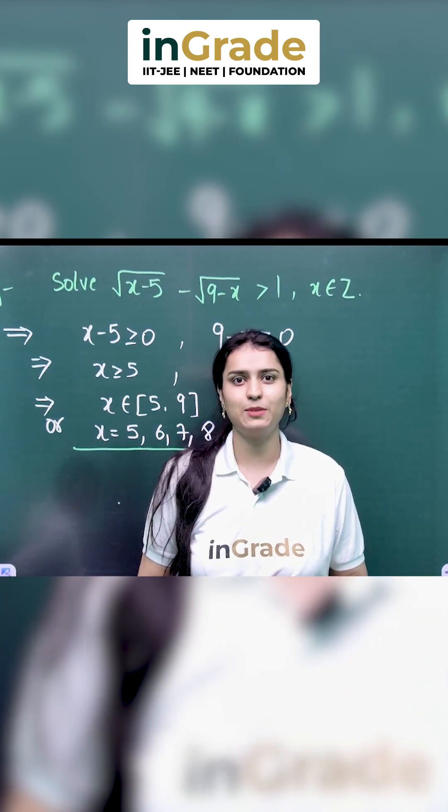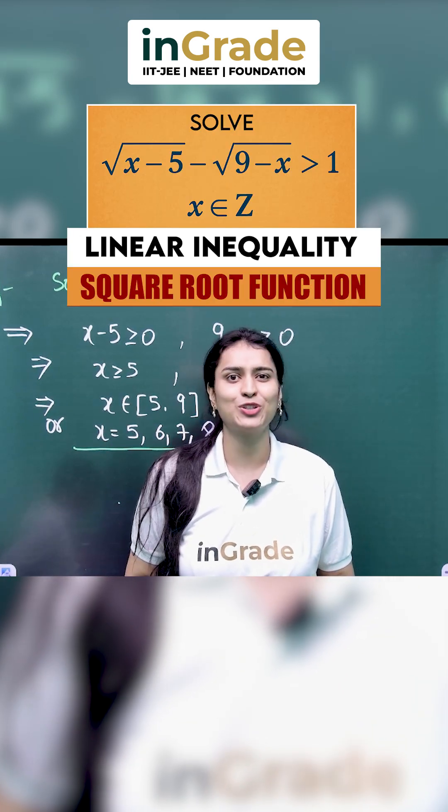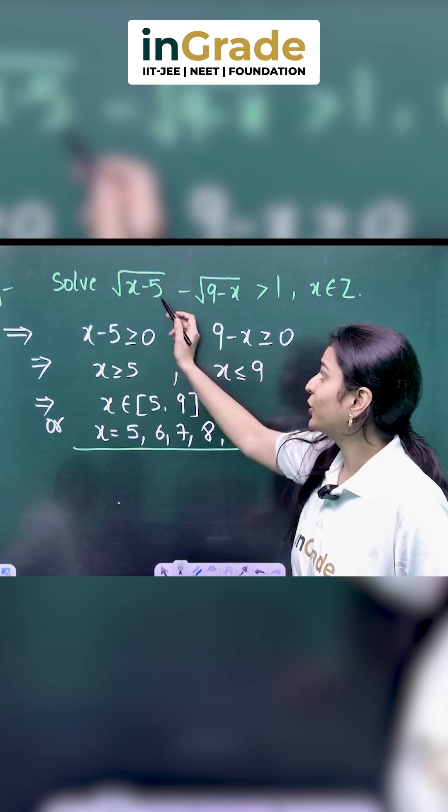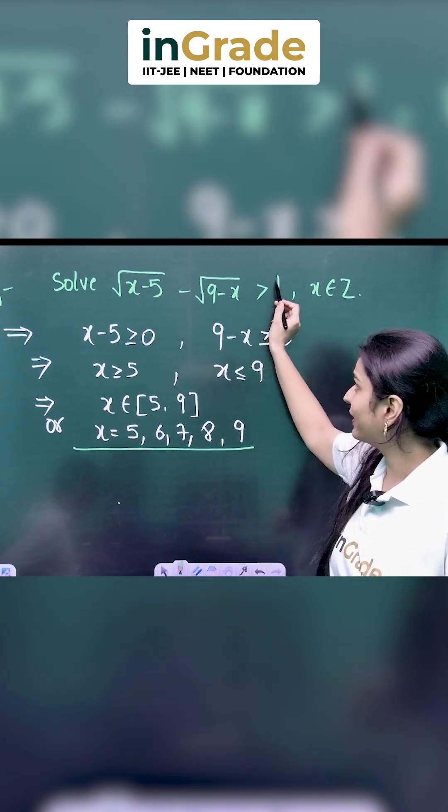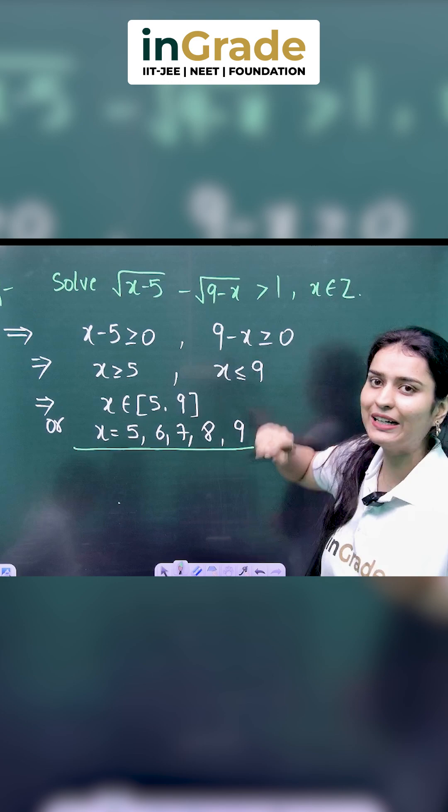Hello friends, our today's question is based on the topic of inequalities. So, let's do the question. Here, √x-5 - √9-x should be greater than 1 for x belonging to integers.